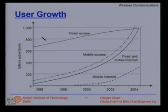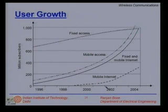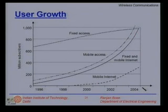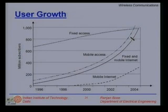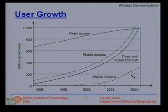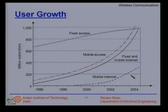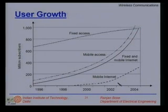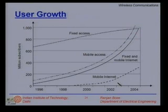This graph tells us the user growth pattern. On the y-axis we have millions of subscribers; on the x-axis we have the years up to 2004. The key conclusion from this graph is the exponential rise of mobile communication systems. A late starter is mobile internet, and as we evolve into 3G systems, we will have more accessibility of the internet through mobile phones. Today a lot of the mobile market is application driven — people talk about killer applications.